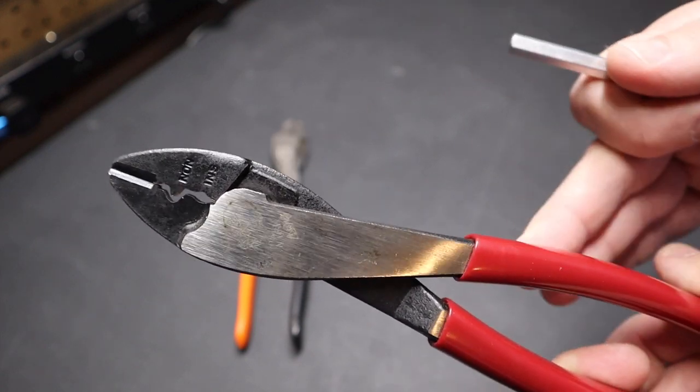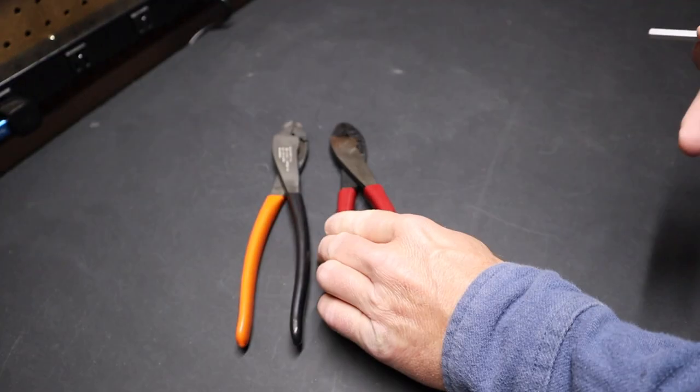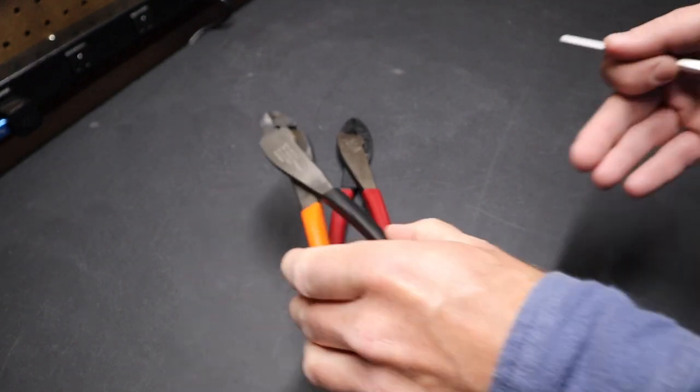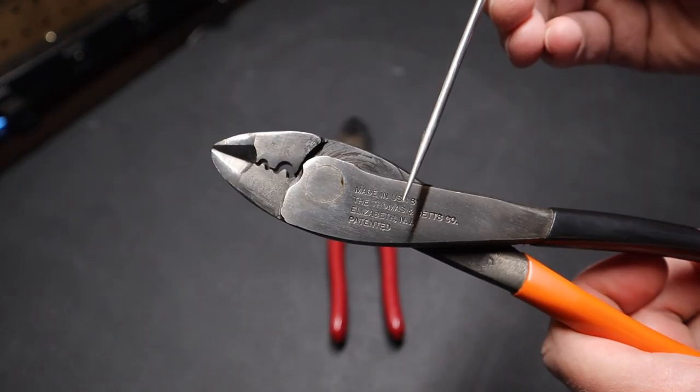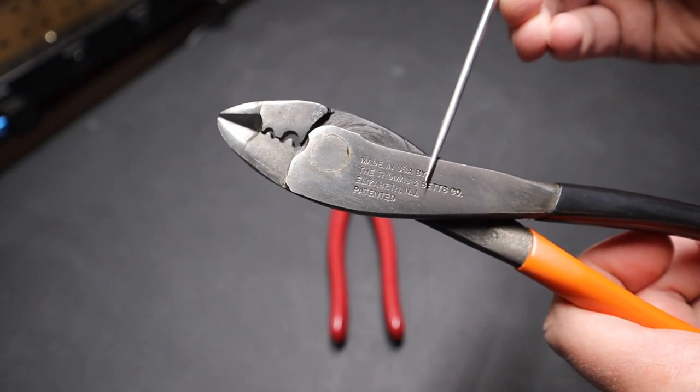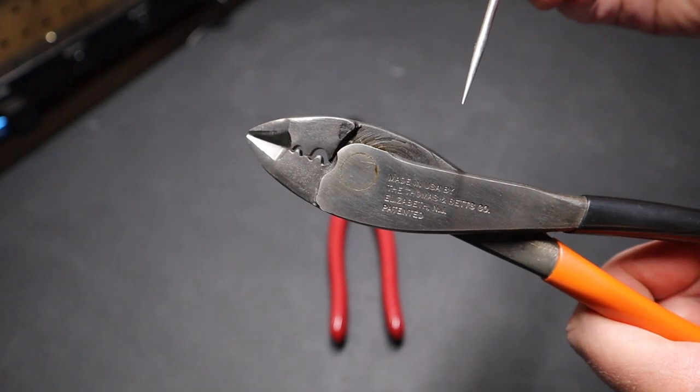These required more grip strength for him. He's getting older, doesn't have the same grip strength he used to have when he was a younger man. Well, then he pulled out these crimpers here. They're made by the Thomas and Betts company in Elizabeth, New Jersey.